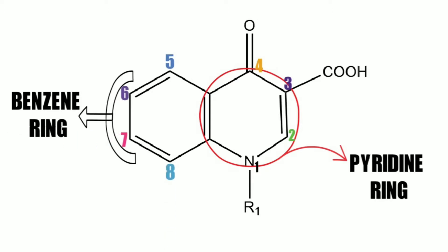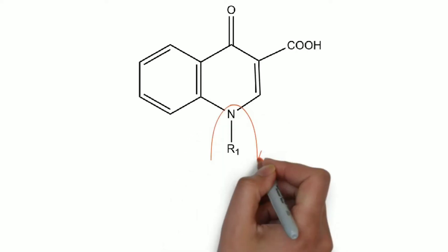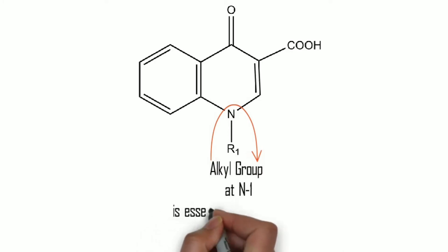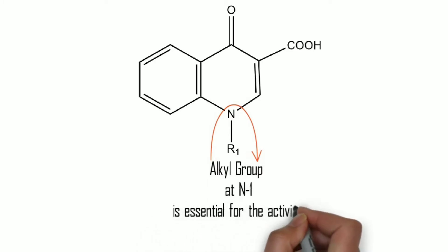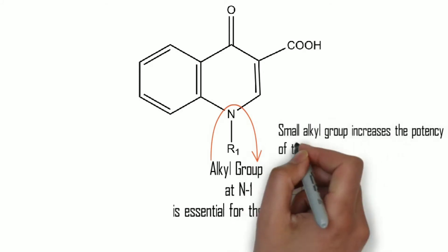Here you can see that it is having ketone group at fourth position. That's why quinolones end with the term 'ONES'. If we see the first position of the ring, nitrogen atom is present and alkyl group at nitrogen atom is essential for the activity. If that alkyl group is small, it will further increase the potency of the compound.